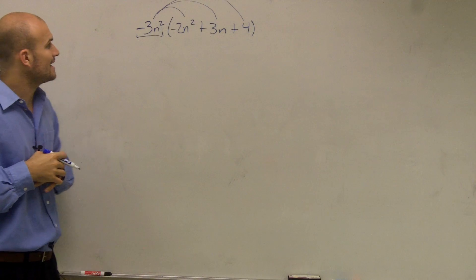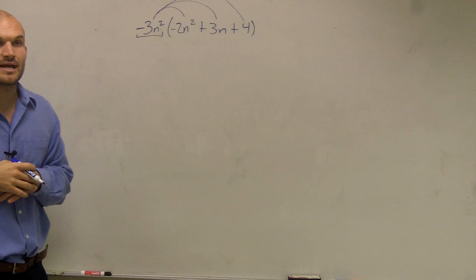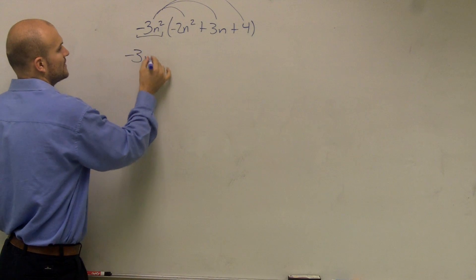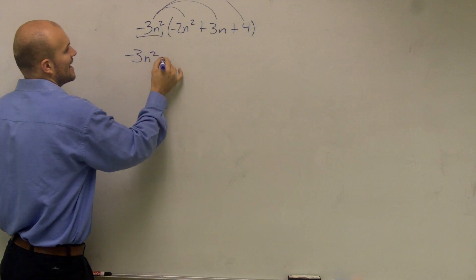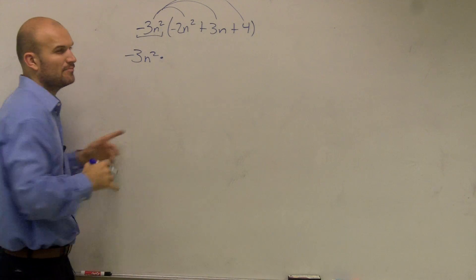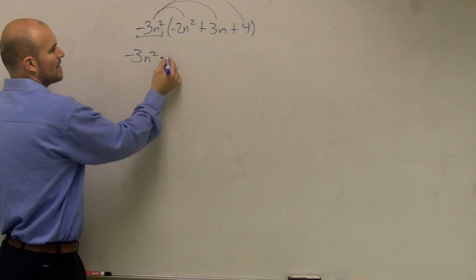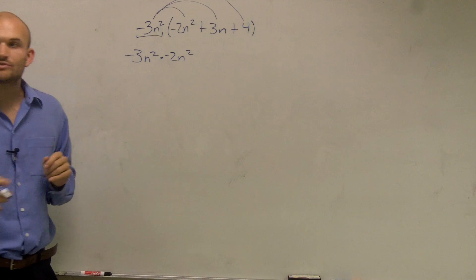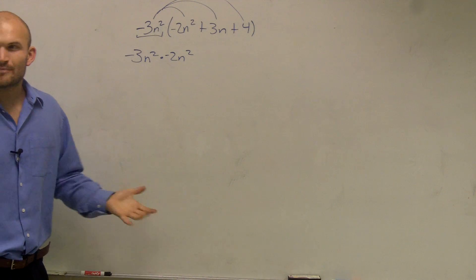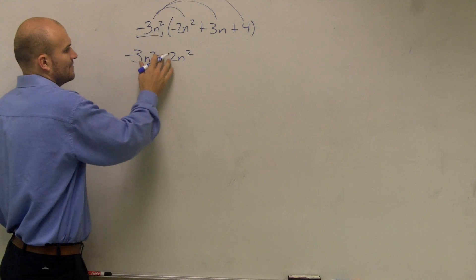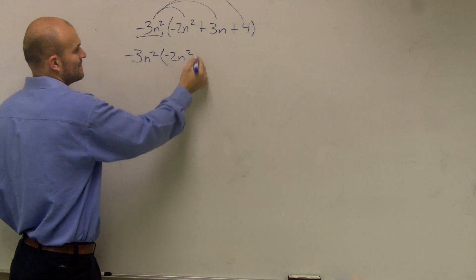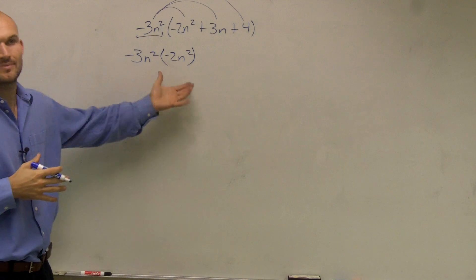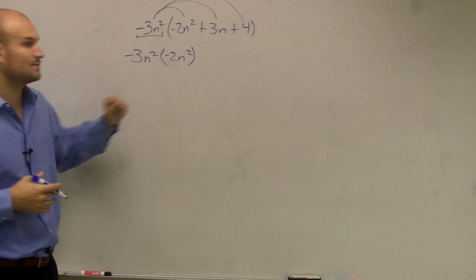So the first one, I have a negative 3 times a negative 2. Let's just write it out: negative 3n squared times negative 2n squared. A simpler and more efficient way, especially when you have negative signs, is to just put it in parentheses. It means the same thing — you're going to multiply those two.